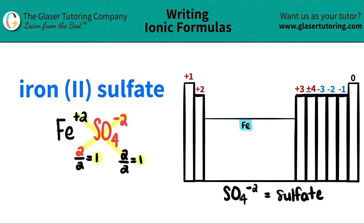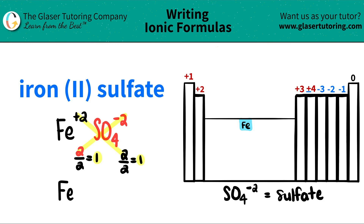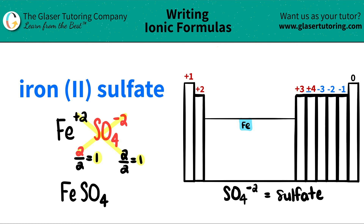Now I'm ready to write it. I have Fe — I only have one of them, so I don't write a subscript. Then I have one sulfate. When you have one of a polyatomic ion, you do not need to write the one and you do not need parentheses. So I'm just going to write SO4. Iron two sulfate is FeSO4.